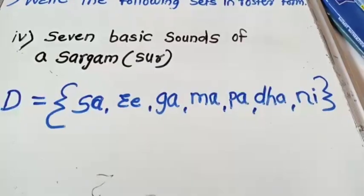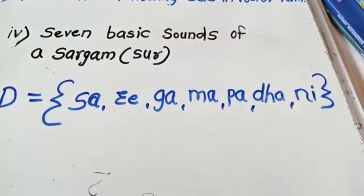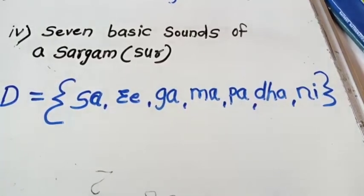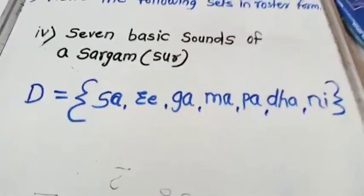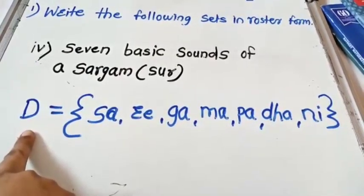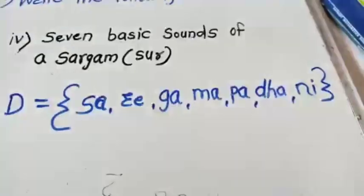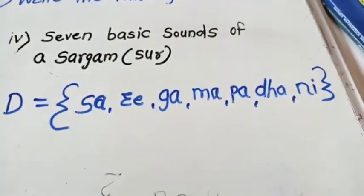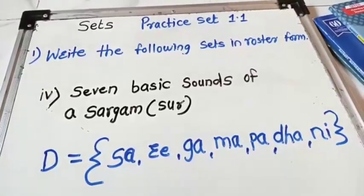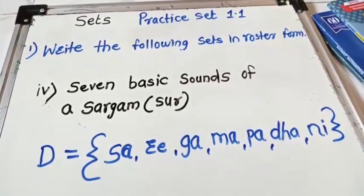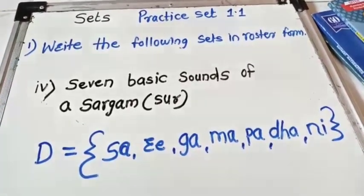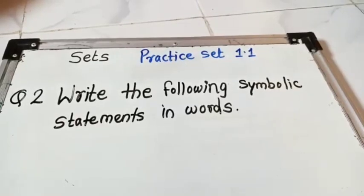Next example: seven basic sounds of a sargam, meaning soor. We take D — you can take any capital letter. Set D contains the seven basic sounds of a sargam. Here we complete the first question in Practice Set 1.1.